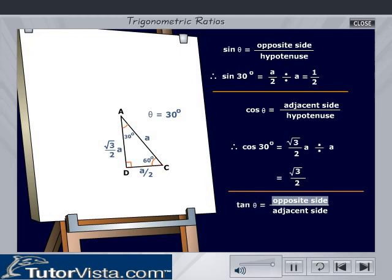Tan theta is given by the opposite side by the adjacent side. Therefore, tan 30° is equal to A by 2 divided by root 3 by 2 into A, that is equal to 1 by root 3.